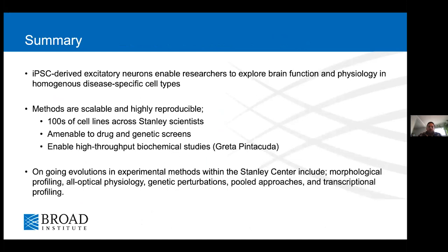As a brief summary: the iPSC-derived excitatory neuron model has enabled us to explore brain function and physiology in a disease-specific and homogeneous cell type. The methods are scalable and highly reproducible. Just within the Stanley Center, well over a few hundred cell lines have been generated into this cell type and used in various assays. The fact that they are scalable, reproducible, and homogeneous means they're amenable to drug and perturbation screens. The ability to generate billions of these cells overcomes significant limitations in following up genetics with biochemical and function-based studies.